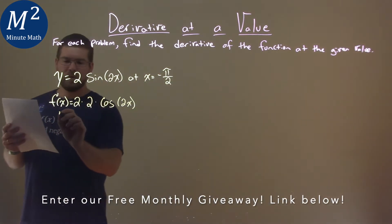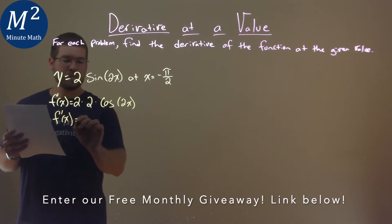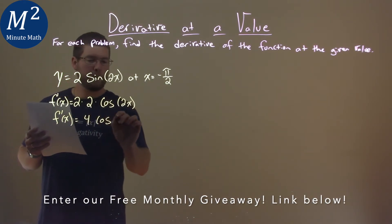Simplify this out slightly, we have f prime of x is equal to 4 cosine of 2x.